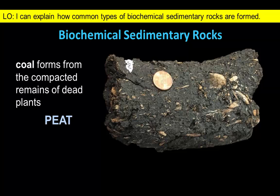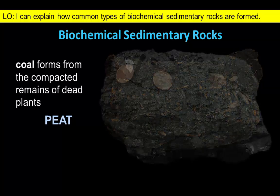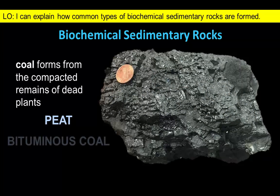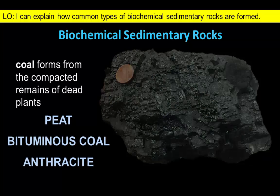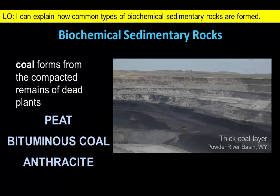Coal deposits begin as spongy peat that can contain lots of woody fragments and a relatively low carbon content. With more time and burial, the carbon content increases and the organic material passes through several stages, eventually forming bituminous coal or anthracite.